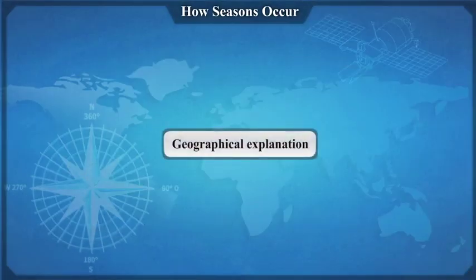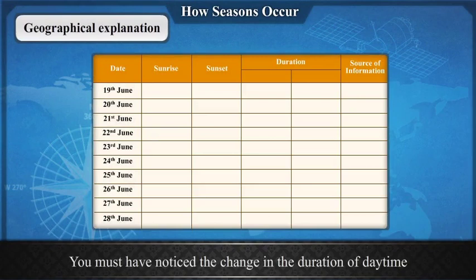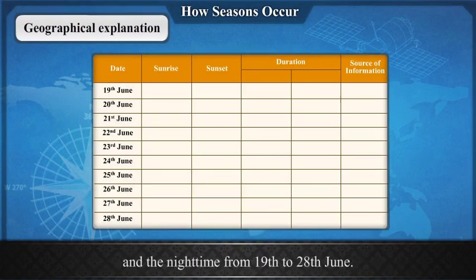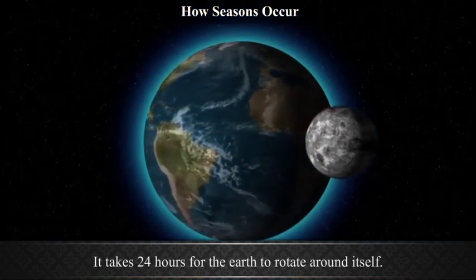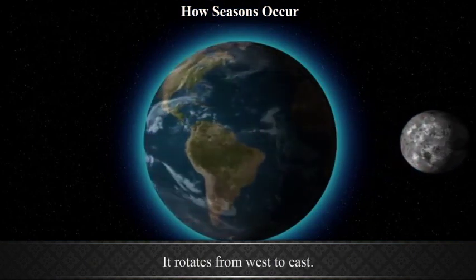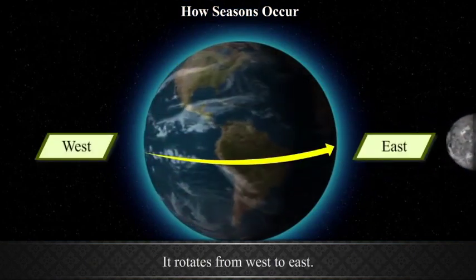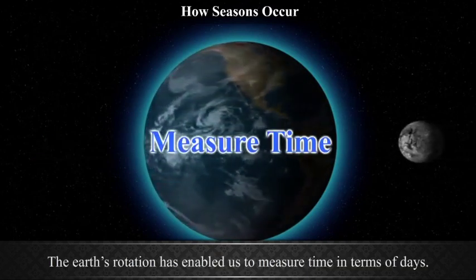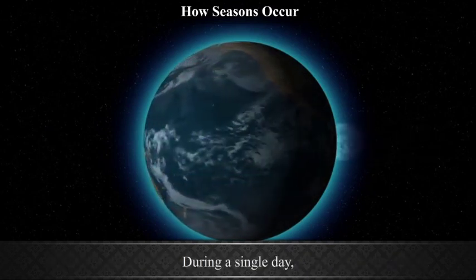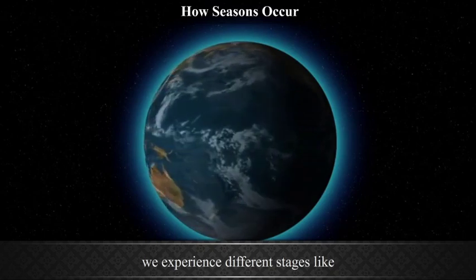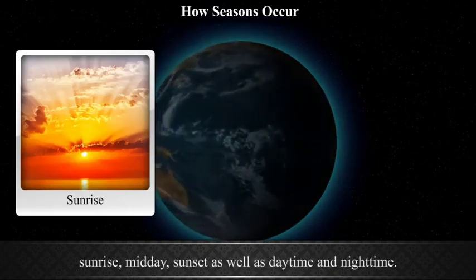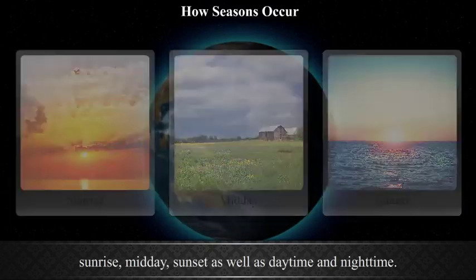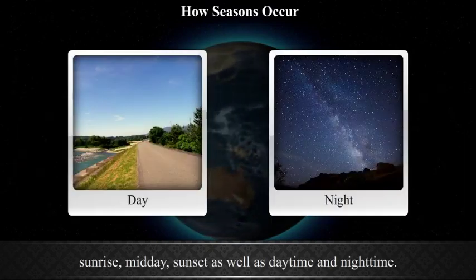Geographical Explanation: You must have noticed the change in the duration of daytime and nighttime from the 19th to the 28th of June. It takes 24 hours for the earth to rotate around itself, and it rotates from west to east. The earth's rotation has enabled us to measure time in terms of days. During a single day, we experience different stages like sunrise, midday, sunset, as well as daytime and nighttime.